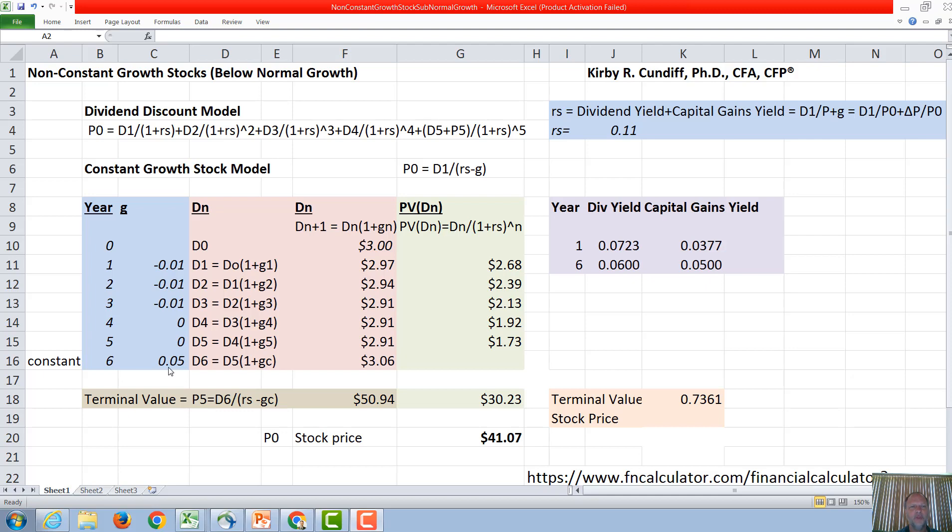The next step in this process is we have to calculate all of these dividends, and then we'll have to calculate P5. So if D0 is $3, D1, since we have a shrinking company, is going to be $3 times 1 plus negative 0.01, or 0.99, gives us $2.97.